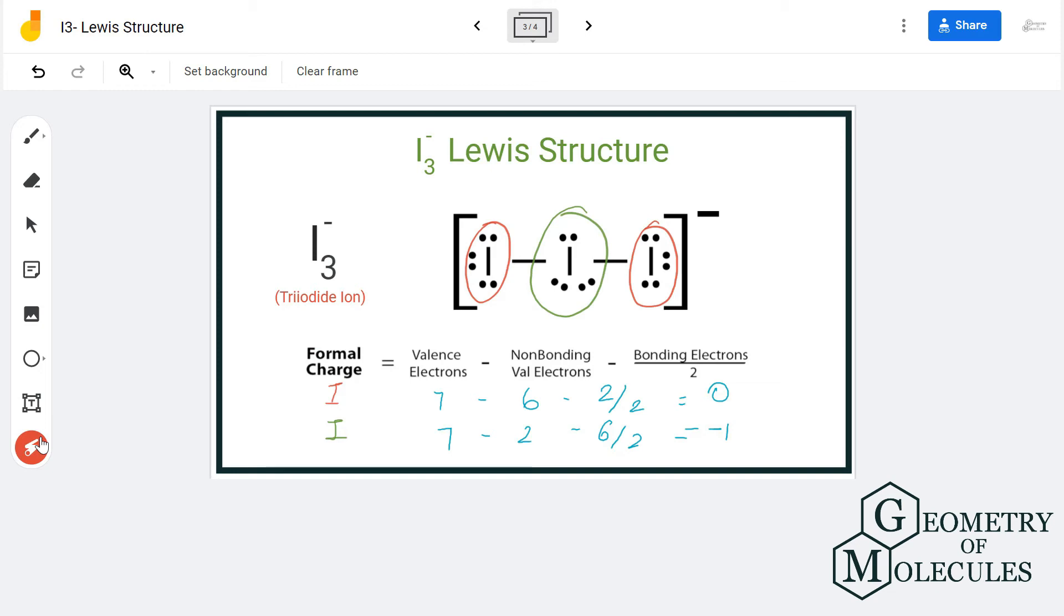iodine atoms on the outside have seven valence electrons, out of which six are non-bonding and two are bonding. Hence, they have a formal charge of zero. But when we come to the central iodine atom, it has seven